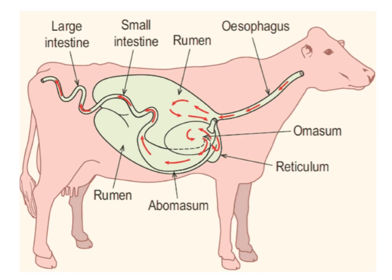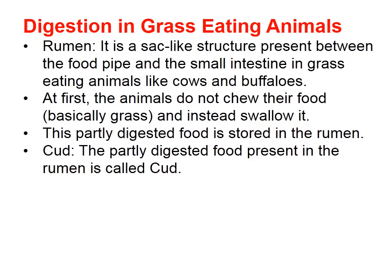This happens because when they go grazing, they don't have much time, so they quickly swallow the food. Inside the rumen, digestion happens, and when they are resting in a comfortable position, the semi-digested food comes back to their mouth. They chew it again, and after that it goes to the stomach for complete digestion. The reason they have a rumen and we don't is simply because they eat grass.